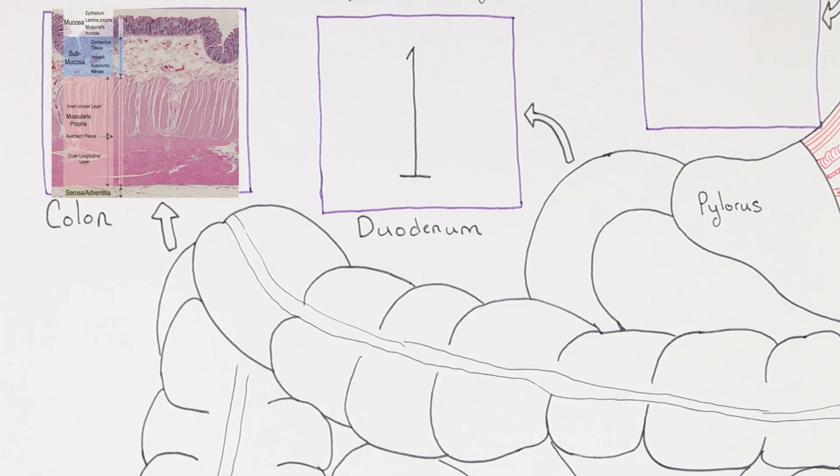Next is the submucosa, which contains connective tissue, vessels, and autonomic nerves. Following is the muscularis propria with an inner circular layer and an outer longitudinal smooth muscle layer. In this section, notice that the inner circular layer has fibers that are pointing out at you. This is because this section was taken horizontally through the colon, rather than cross-sectionally through the lumen of the colon.